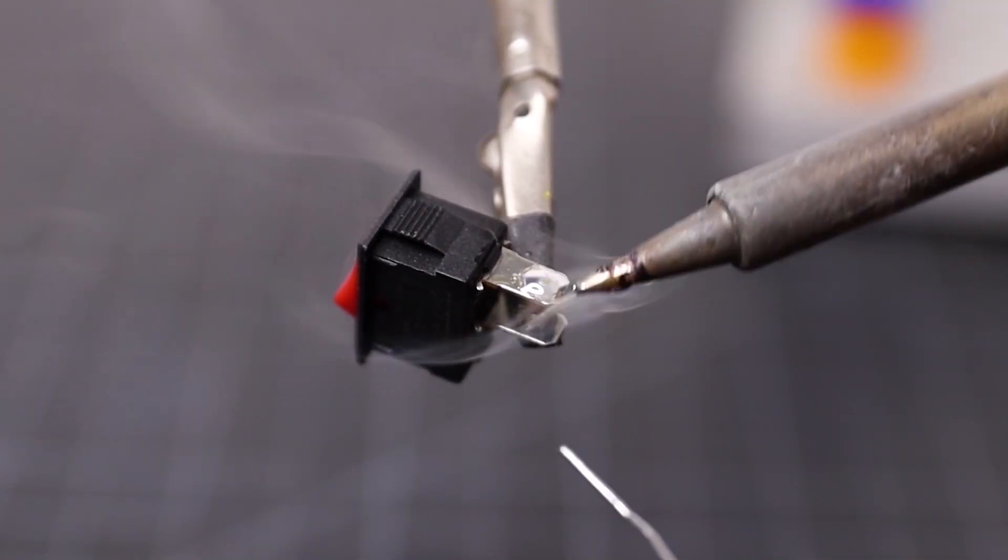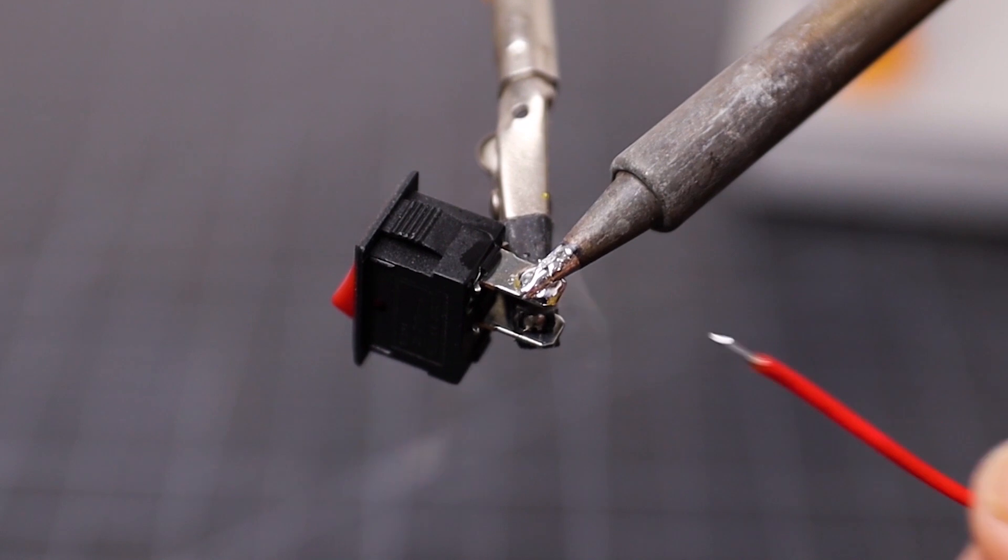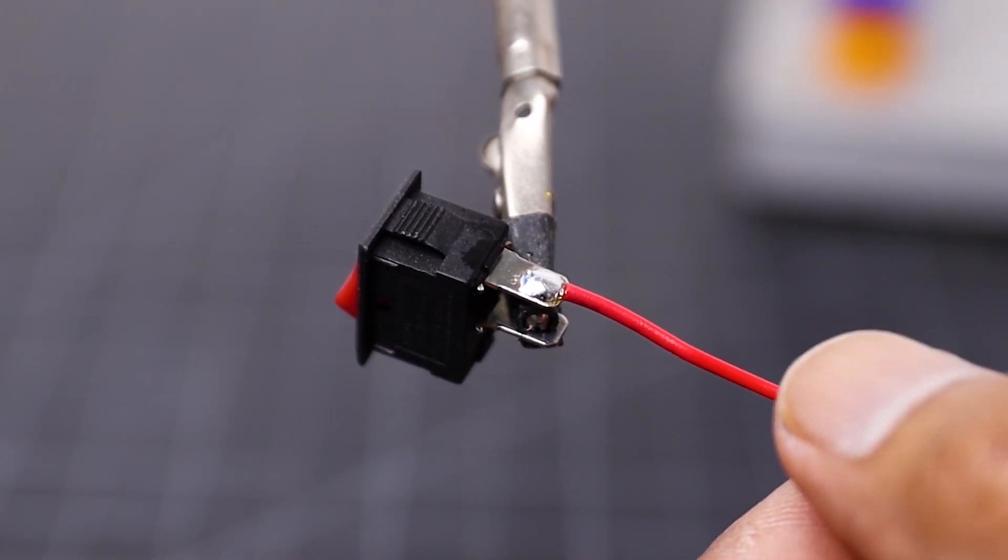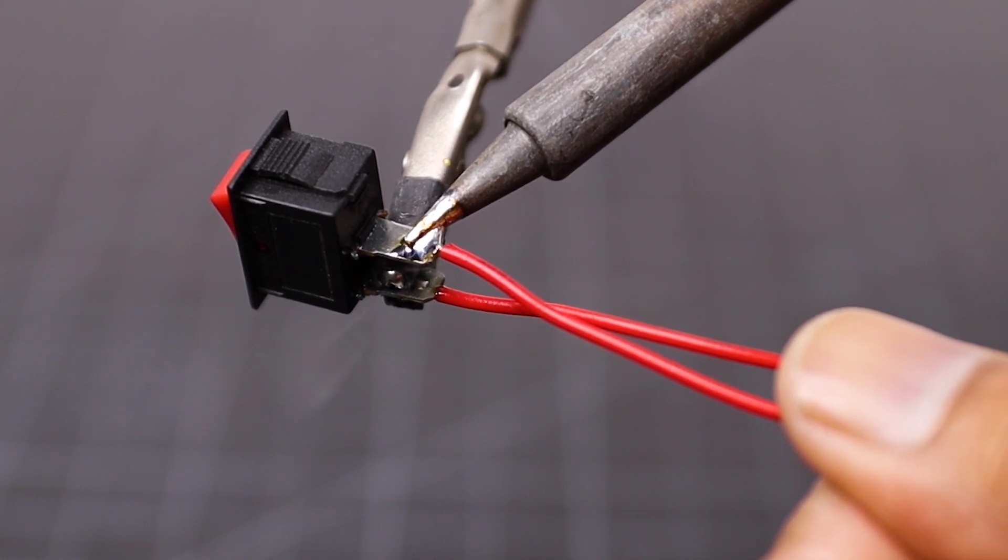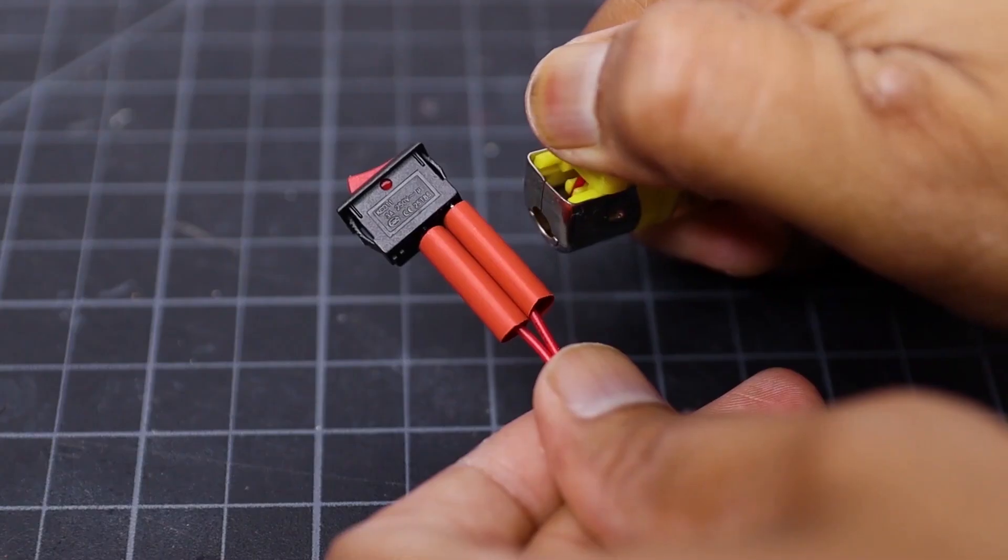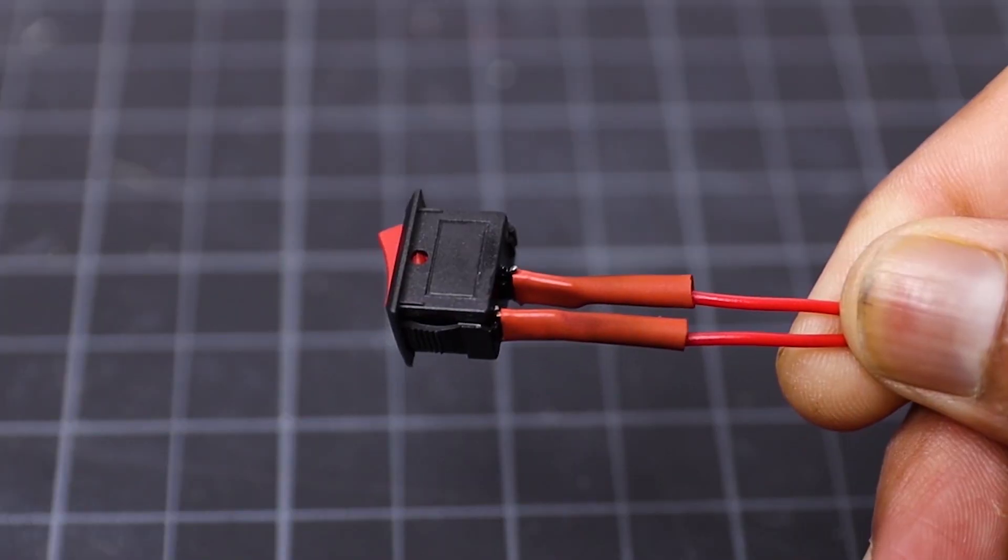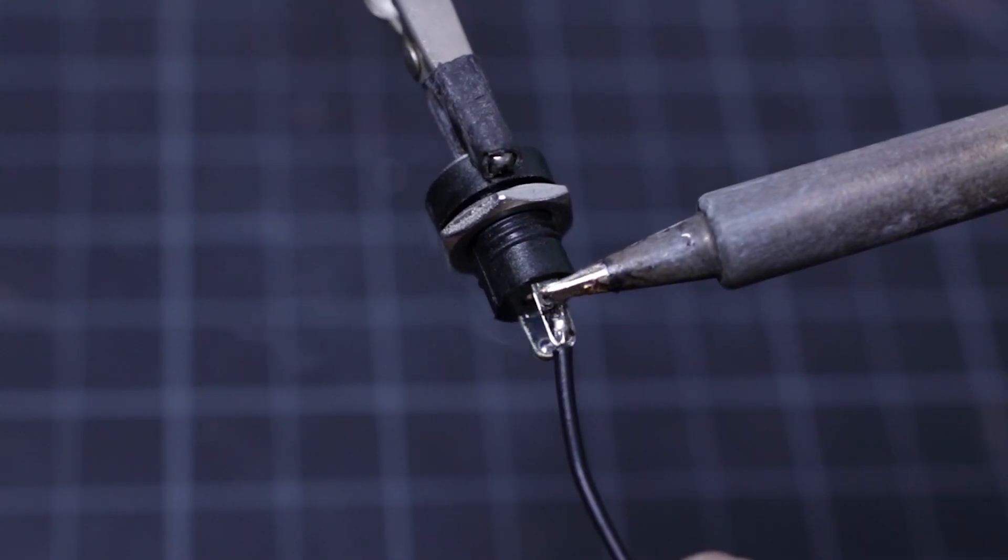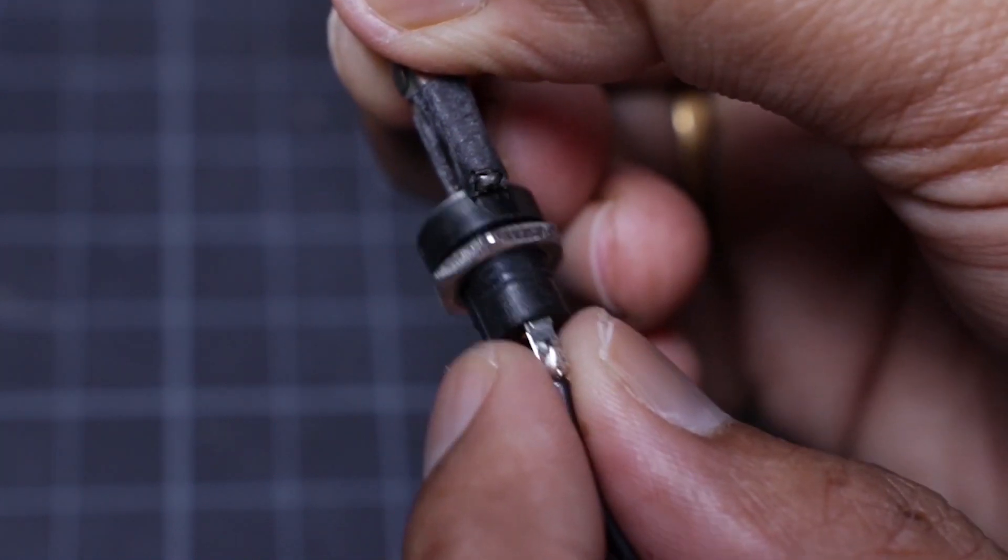Then I have soldered two terminal wires to the rocker switch. To insulate the soldering joints I have applied heatshrink tube. Then I have prepared the 5.5mm female DC jack to connect an external solar panel.